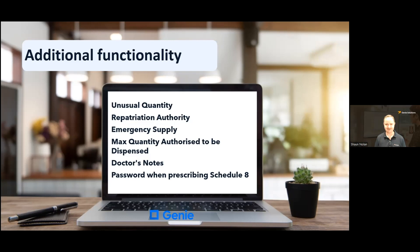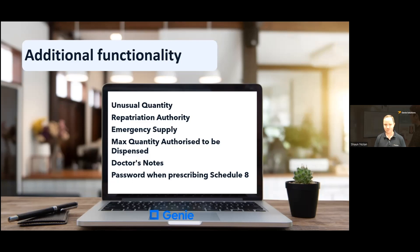Unusual Quantity indicates if an unusual quantity is in place for this medication. Repatriation Authority indicates when a medication meets requirements for unlisted Repatriation Authority — this is applicable for patients with a DVA card where the medication is indicated on the RPBS. Emergency Supply indicates if the medication is being prescribed under an emergency supply; if the Emergency Supply flag is indicated, a token is not generated for the patient. Max Quantity Authorised to be Dispensed indicates the absolute maximum quantity which can be dispensed for this medication. Doctor's Notes is a free text field where the prescriber can enter relevant notes for the pharmacist — for example, in Queensland, adding the word 'approved' to a script for isotretinoin.